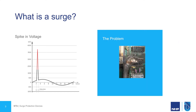So firstly, let's define what is a surge. A surge is a spike in voltage, generally in the kilovolt or tens of kilovolt range, for a very short period of time in the microseconds. The problem with this is that even though it's a very short period of time, that high voltage can cause damage to electrical insulation and sensitive electronic equipment.